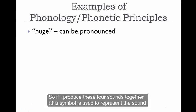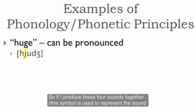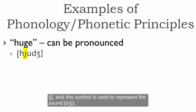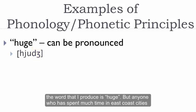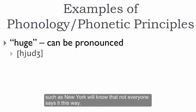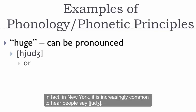If I produce these four sounds together — using the corresponding symbols to represent each sound — then the word that I produce is 'huge.' But anyone who's spent much time in East Coast cities such as New York will know that not everyone says it this way. In fact, in New York, it's increasingly common to hear people say 'yuge.'